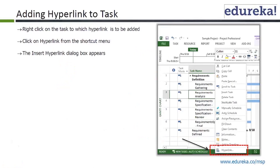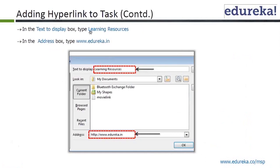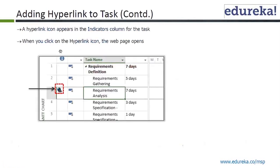Adding a hyperlink to a task: right-click on the task to which the hyperlink is to be added and click hyperlink from the shortcut menu. The insert hyperlink dialog box appears. In the text to display box, type 'learning resources.' In the address box, type www.edureka.co. Then click OK. That hyperlink will appear in the indicator column for the task, and when you click the hyperlink, the web page opens. Let's do it.